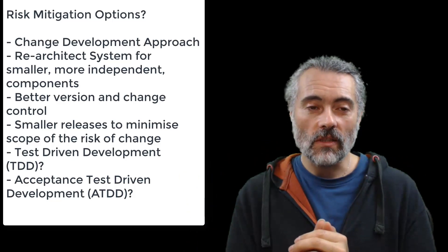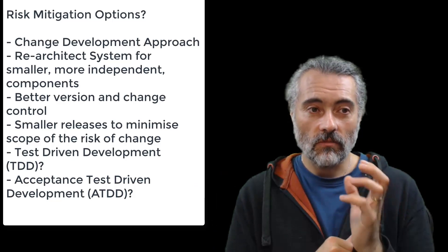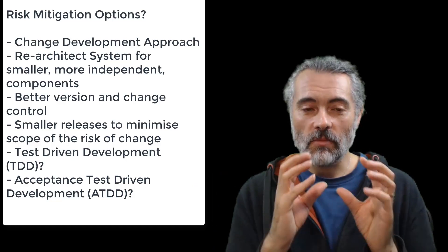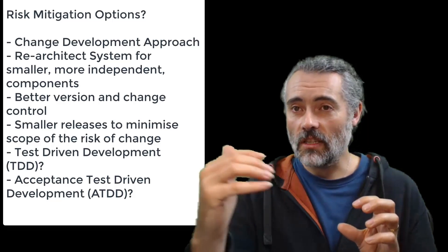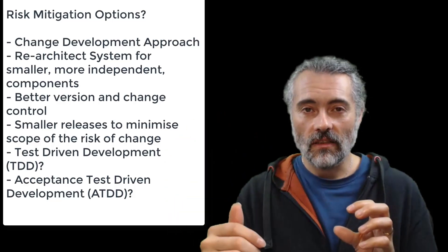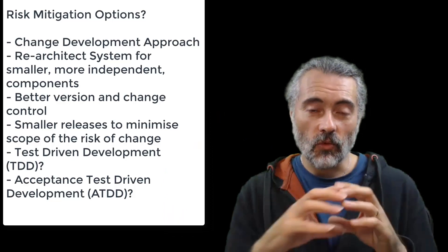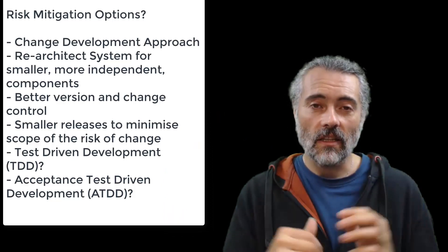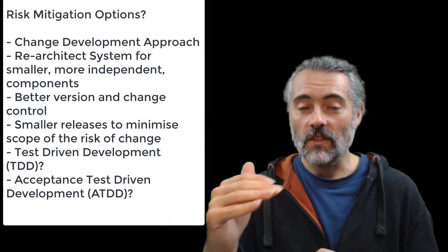But again, what we've got is we've got acceptance tests, which presumably have been automated, which cover a specific set of criteria. The changes might be outside that criteria. So it might not overlap with what we've already decided is covered in there. So we might still have to do something else.